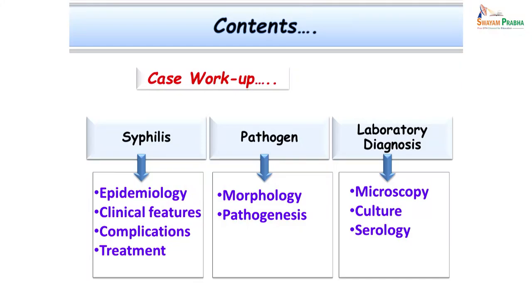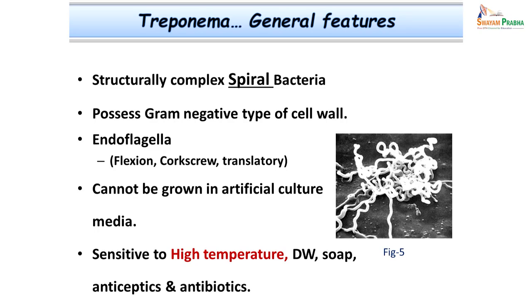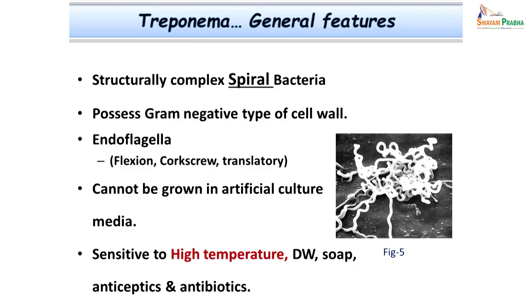Let us learn more about the organism in detail. Treponema pallidum — as the name indicates, pallidum means pale staining; trepo stands for turns or spring, and nema stands for thread. These are spiral organisms, structurally more complex than other bacteria. They possess a gram-negative type of cell wall, however they cannot be stained by gram stain and cannot be visualized by light microscope. They possess endoflagella which give a peculiar corkscrew type of motility — moving spirally by flexion and extension. They cannot be grown in any artificial media, though non-pathogenic strains can be maintained.